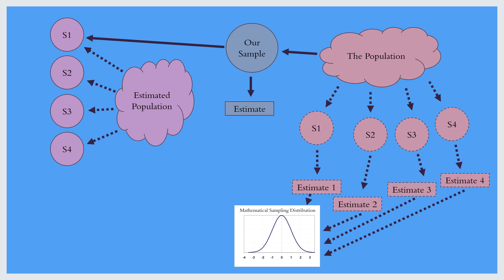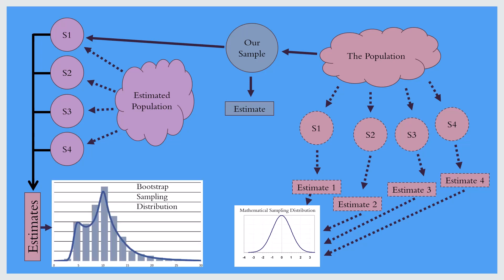We're using our sample to create these other samples. We create an estimate of a statistic for each sample and with those estimates we again have a bootstrap sampling distribution. The key difference with non-parametric bootstrapping is that we never had to assume any kind of distributional form. Rather, we used our observations to create all these different samples. Whereas in the parametric bootstrap method, we assumed a particular mathematical form for our distribution, then used the sample observations to estimate the parameters of that distribution and drew our samples from it.